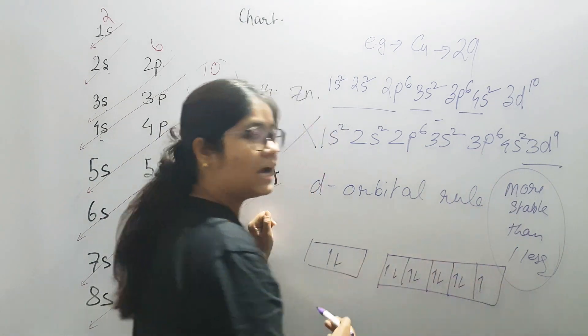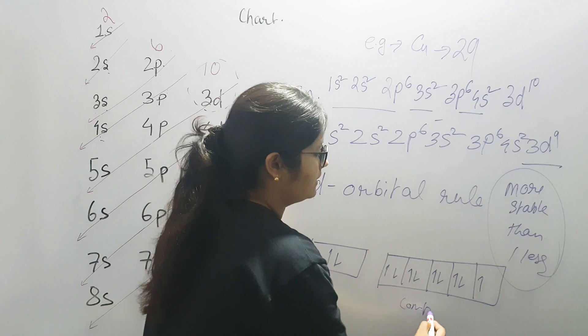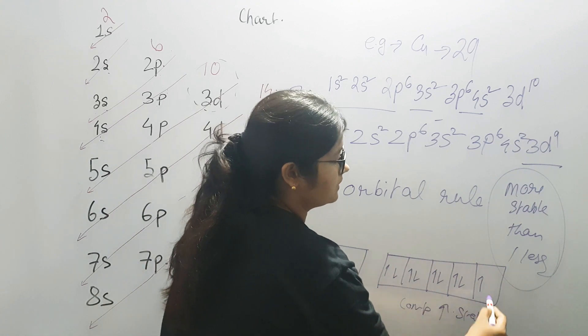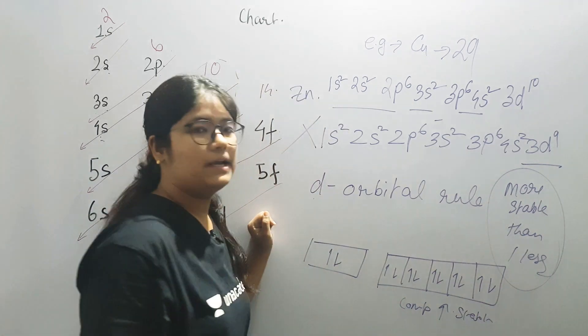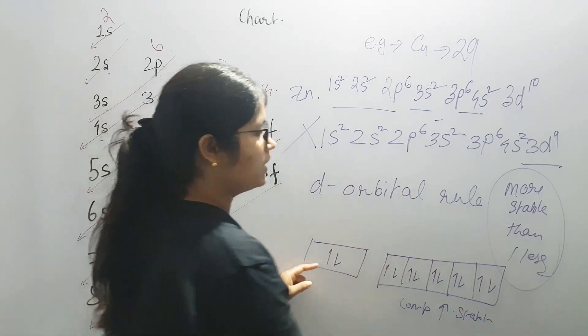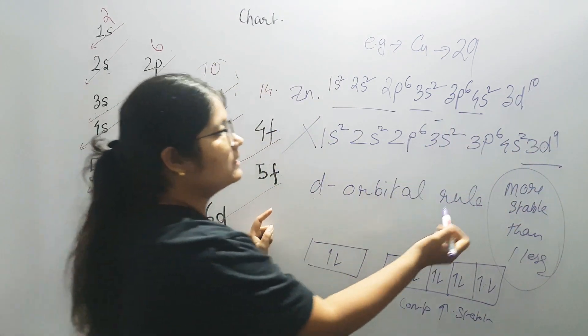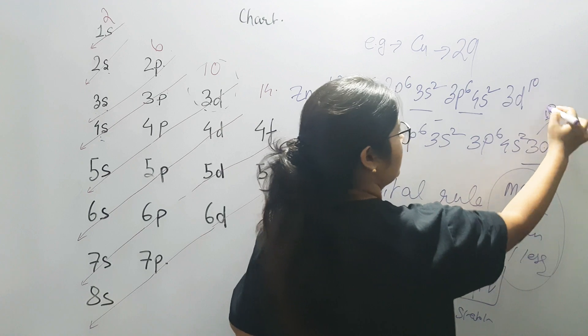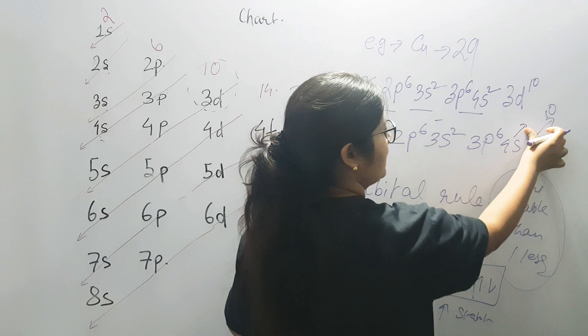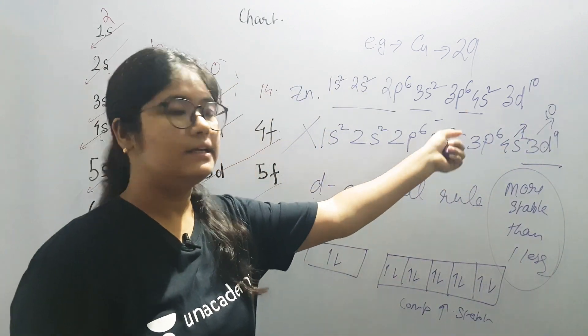What does our rule say? Half filled and completely filled is more stable. If it is completely filled, completely filled D orbital is more stable. If you want to make it completely filled, if you want to make D10, then how can you make it? You have only one option. You have to take one from here. What will happen here? 4S1 and 3D10.